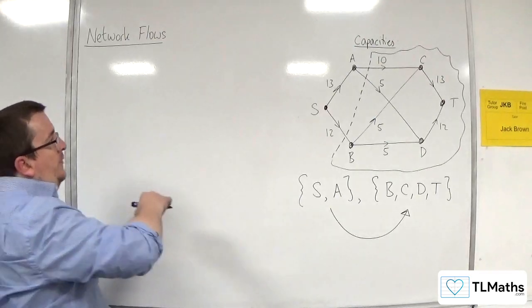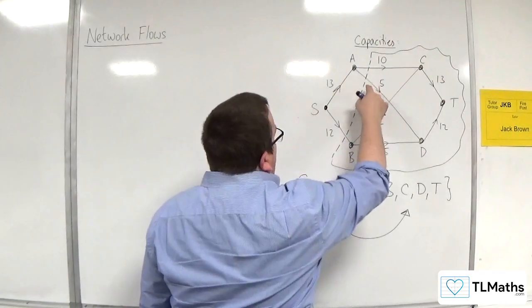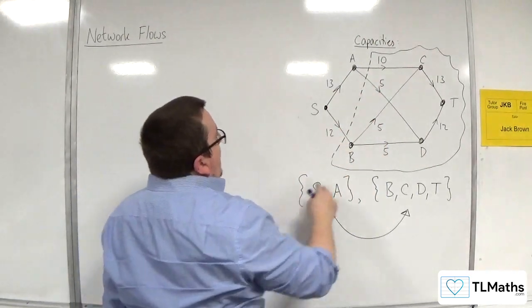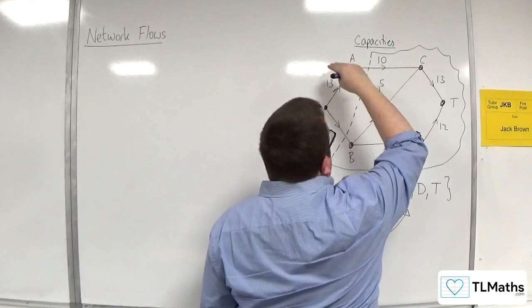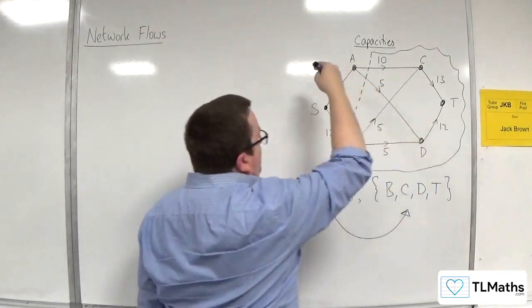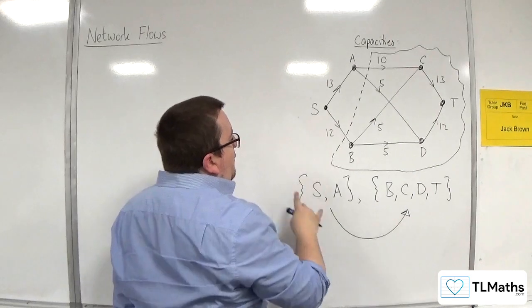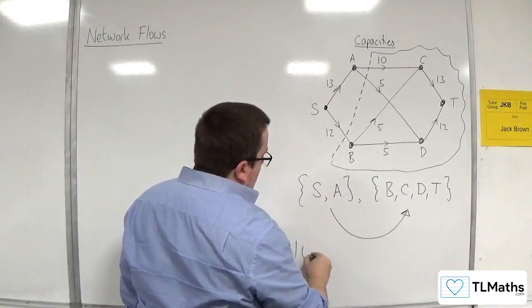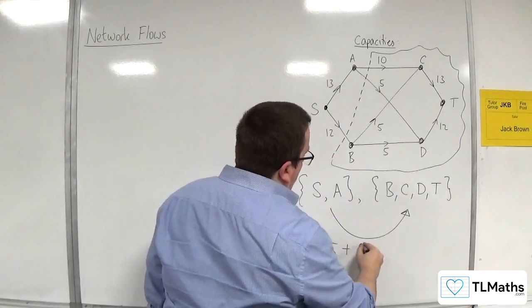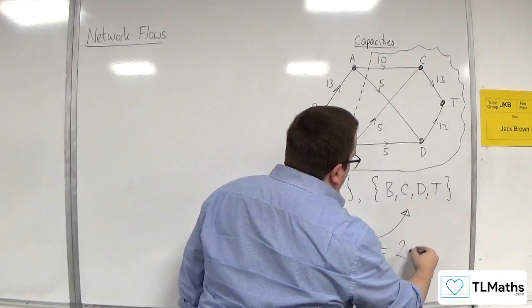So in our case, because we've cut through 10, 5 and 12, and these are going from the source set to the sink set in all three cases, the value of this cut is 10 plus 5 plus 12. So that would be 27.